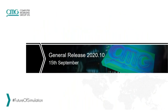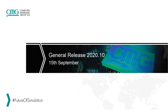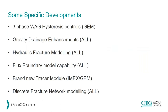Now I'd like to take a closer look at our general release, which has been out for about one month. It was released publicly on our website on the 15th of September. There are some specific larger encompassing types of developments I want to talk about: three-phase WAG hysteresis in GEM, some gravity drainage enhancements across all three simulators, hydraulic fracture modeling across all three simulators, the flux boundary capability across all three simulators, a brand new tracer module in both IMEX and GEM now supported in Builder (currently being put into STARS for 2021), and a new beta feature — discrete fracture network modeling.